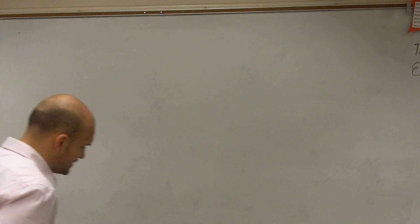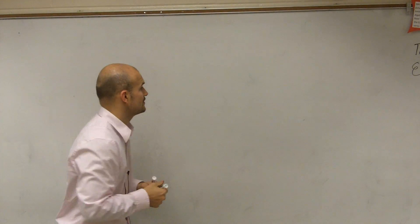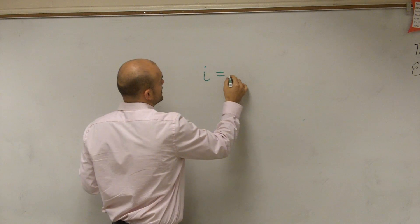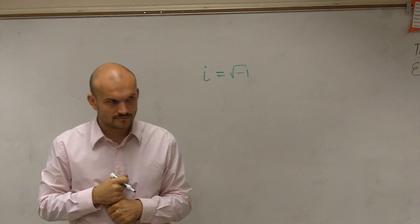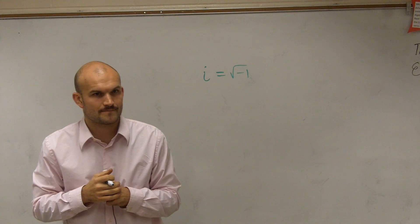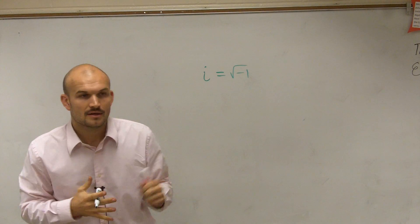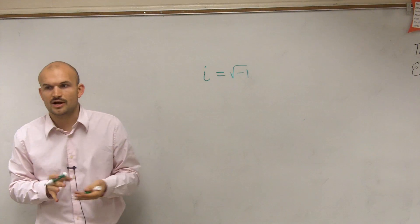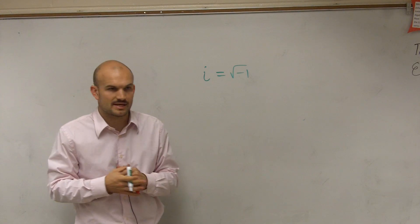All right, so ladies and gentlemen, we looked at our general definition of i. We said i represented the square root of negative 1. Everybody's cool with that? Might not still understand it, but you agree with it, right? So what I want to do is figure out what about i to higher powers. So what could those represent?